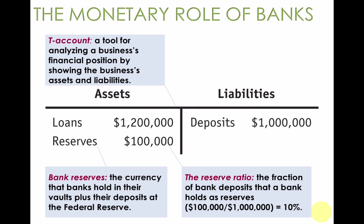The reserve ratio is the fraction of bank deposits that a bank holds as reserves — in this case, $100,000 of reserves divided by deposits of $1 million. That's 10%.